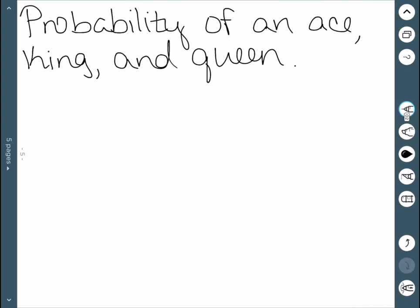This time we'll once again draw without replacement, and we're going to draw three cards. We want to know the probability of getting an ace, a king, and a queen. Well, there are four aces in the deck out of a total of 52 cards. For our second event, we've removed one of the aces, so we're down to 51 cards, but there are still four kings.